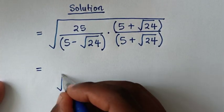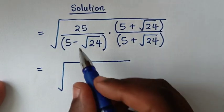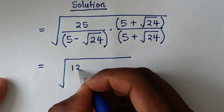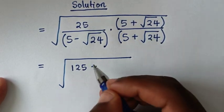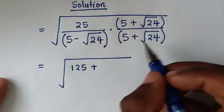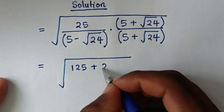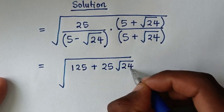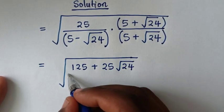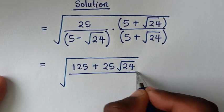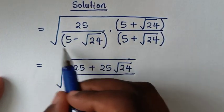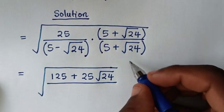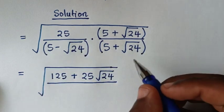So in the numerator, square root of 25 times 5 gives us square root of 125, plus square root of 25 times square root of 24, which gives us 25 square root of 24. Then over the denominator, this times this is in the form of (a minus b)(a plus b).